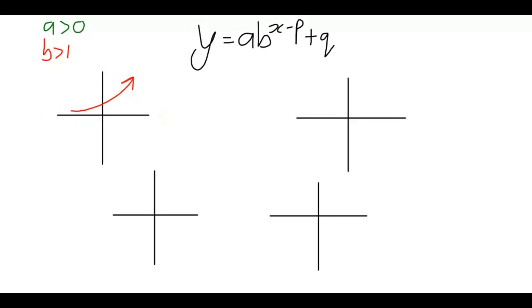Now, on the other hand, I could have the b greater than 1 still, but the a less than 0. So, now, this a is negative, so you actually have a negative function. And this type of guy is a reflection in the x-axis.